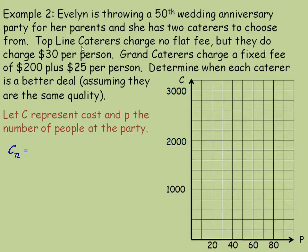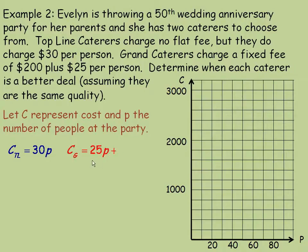For the Top Line Caterer — notice the subscript — it is $30 per person, so C equals 30P. For the Grand Caterer, there is a $200 fixed fee plus $25 per person, so C equals 25P plus 200. We are going to graph both of these lines.